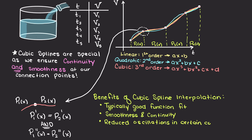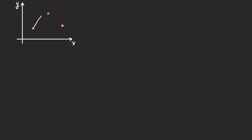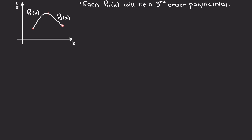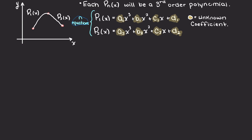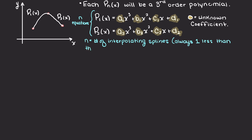Now that we have an idea of why cubic splines are useful, let's talk about how to use cubic splines. Between each connection point, we are going to have a third order polynomial, that being a cubic spline. Imagining a set of data that looks like this, each point that we wish to interpolate through will be described as the following general cubic polynomial. Therefore, this will create a set of polynomial equations that we need to solve the coefficients for, and we will have n equations.